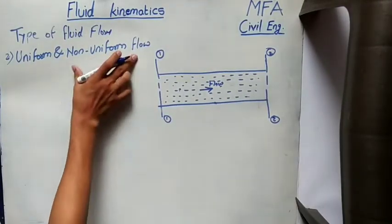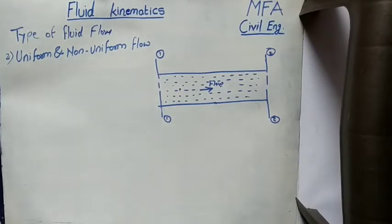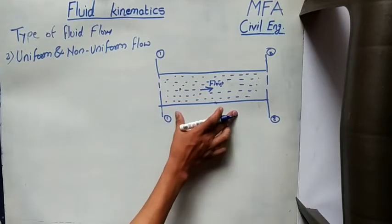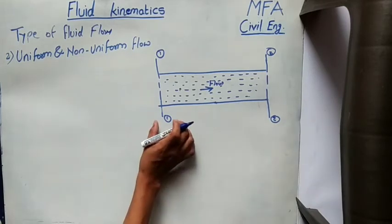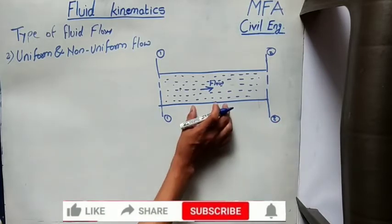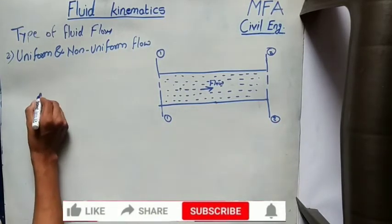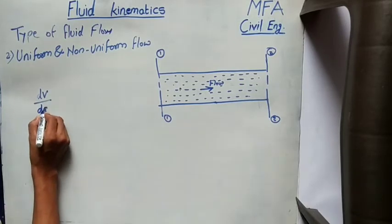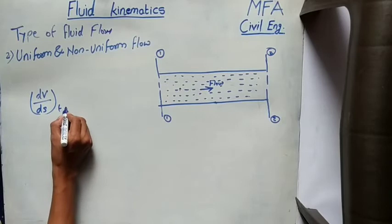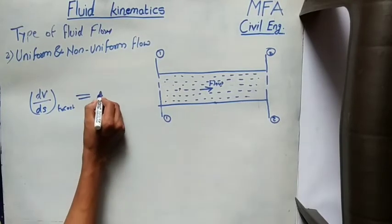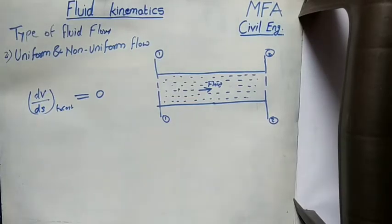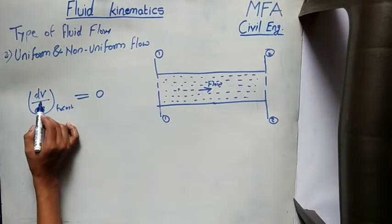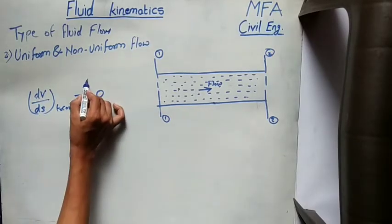Second is uniform and non-uniform flow. Uniform flow is that type of fluid flow in which the velocity at any given time interval does not change with respect to distance. Consider a fluid flow having two sections, section 1 and section 2. When velocity at section 1 equals velocity at section 2, the flow is uniform. Mathematically, the rate of change of velocity with respect to distance s at any given time interval is equal to zero. Non-uniform flow is that type in which the velocity at any given time interval changes with respect to distance; mathematically, the rate of change of velocity with respect to distance is not equal to zero.